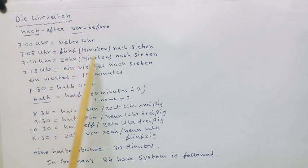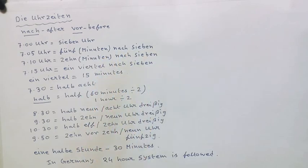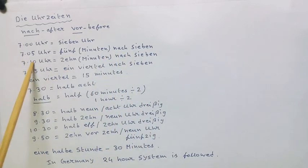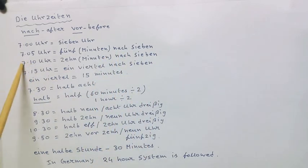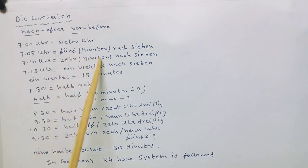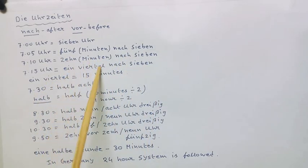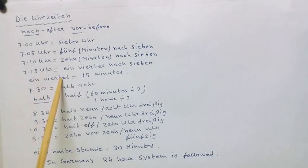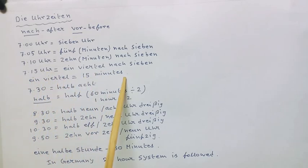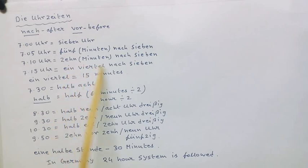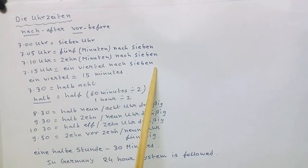Zehn Minuten nach sieben — ten minutes past seven. Ein Viertel nach sieben — ein Viertel means a quarter, that is fifteen minutes. Seven fifteen — ein Viertel nach sieben.